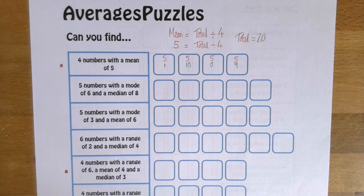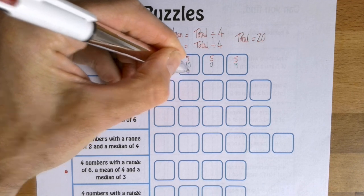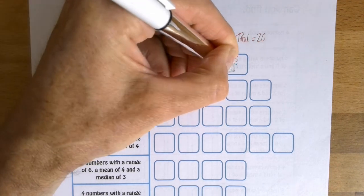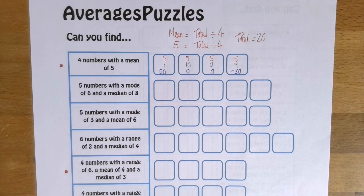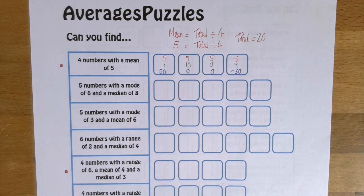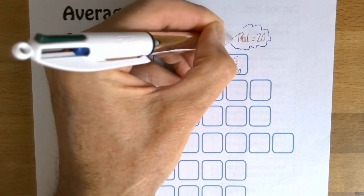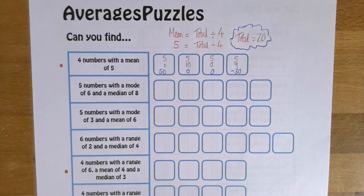Or you might want to be really clever and say, right, I'll have 50, zero, zero, and minus 30. There you go. Those numbers, if you add them up, add up to 20. And then when you divide them by four, you get five. So with many of these, not all of these, but with many of these, working out what the numbers have to add up to is a key starting point.